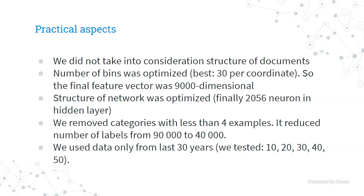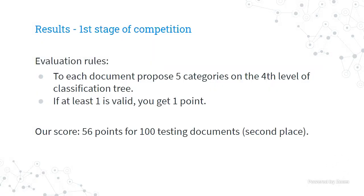We only used data from the last 30 years — testing showed that was the optimal window — because older documents use different language and cover different ideas; 50 years ago there were no patent applications about AI, for example. In Stage 1 of the competition, we proposed five categories at the fourth level, getting one point if at least one was correct. We scored 56 points from 100 test documents and took second place.